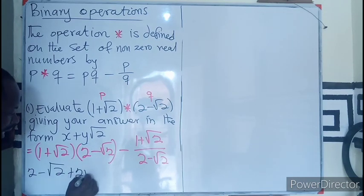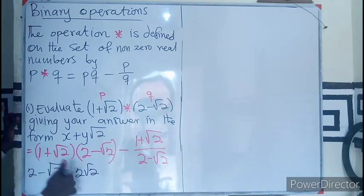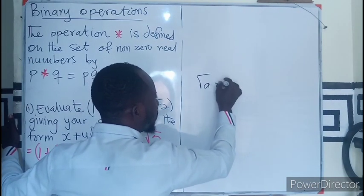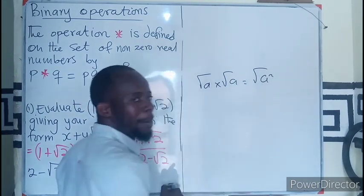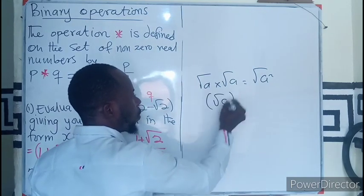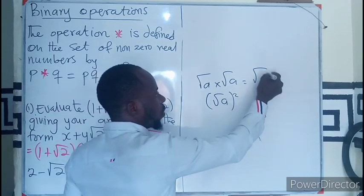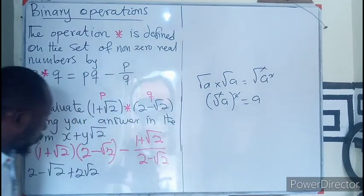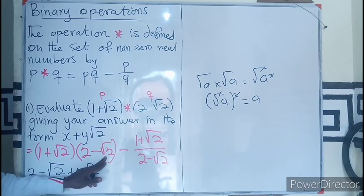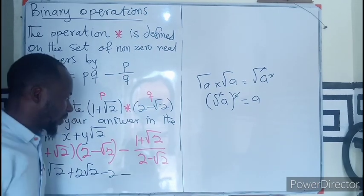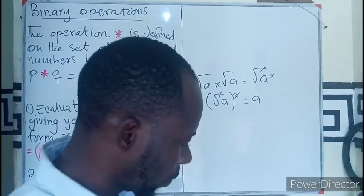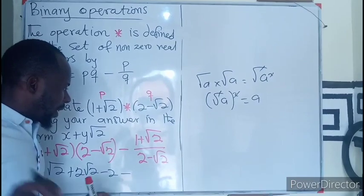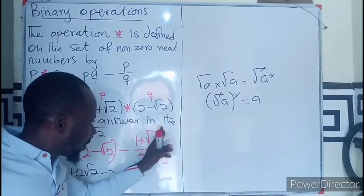The rational term comes before the irrational term. If you multiply root a times root a, this simply means root a squared, which cancels to give you only a. So in this case, root two times root two gives us just two. We then combine the results from this side of the expansion.